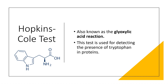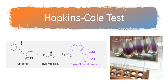The Hopkins-Cole test, also known as the glyoxylic acid reaction, is used for detecting the presence of tryptophan in proteins. The indole group of tryptophan reacts with glyoxylic acid in the presence of sulfuric acid to give a purple colored product. A purple ring appears between two layers. Several aldehydes react with the oxidized product of the indole nucleus of tryptophan to give violet colored complexes. Sulfuric acid with mercuric sulfate is used as the oxidizing agent. A violet color between two layers indicates a positive test.